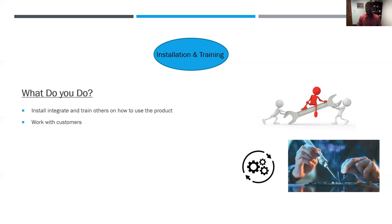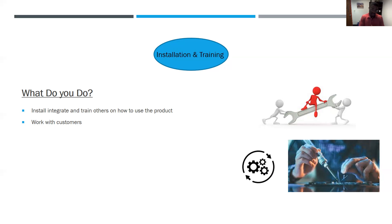The last role I'd like to talk about is installation and training. Once you secure the deal and sell it to your customer and it's being implemented, the installation and training team comes and trains the customer's team — their finance function or whoever's using the product they just bought from you. They integrate it and train others on how to use that product. They're still working with customers, they're usually part of the professional services team, and they're frontline. You can see advancement from these roles into product management, sales engineering, and software development roles.